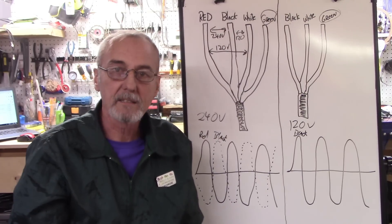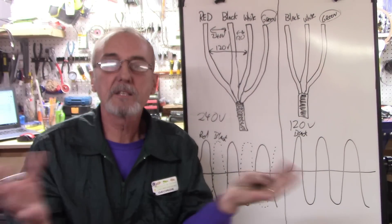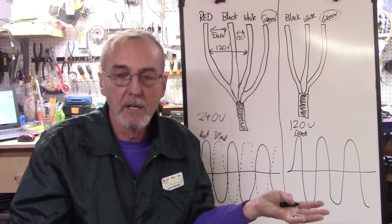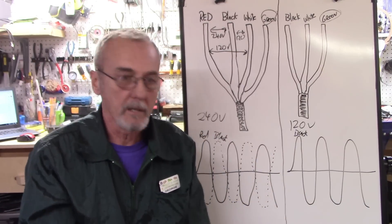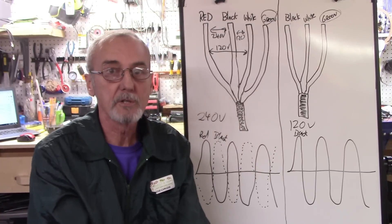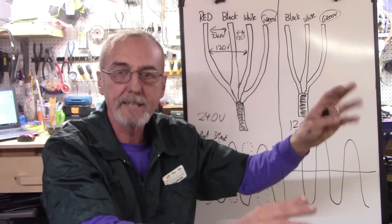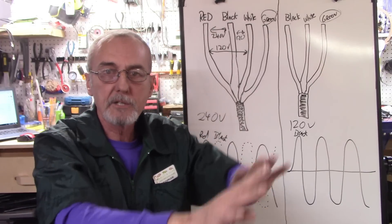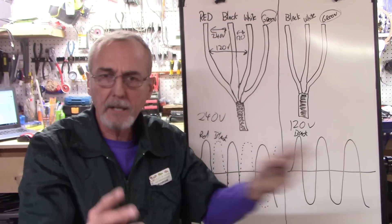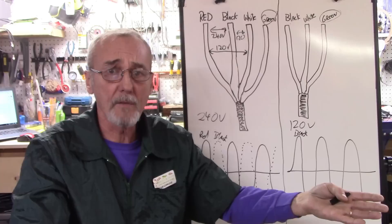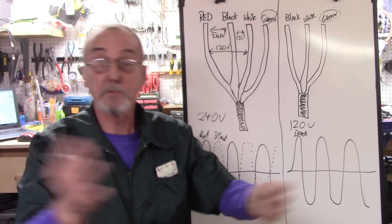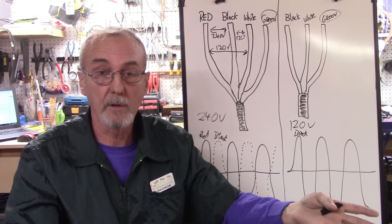Now, why is that? Well, that is because our appliances, let's take for instance a range, your stove. Your heater elements and the heating element inside the stove is normally 240 volts. But you've got all this other stuff in there, all these dials and trinkets and things that make it work, that turn on controls, and the clock. Well, they normally run off 120 volts.